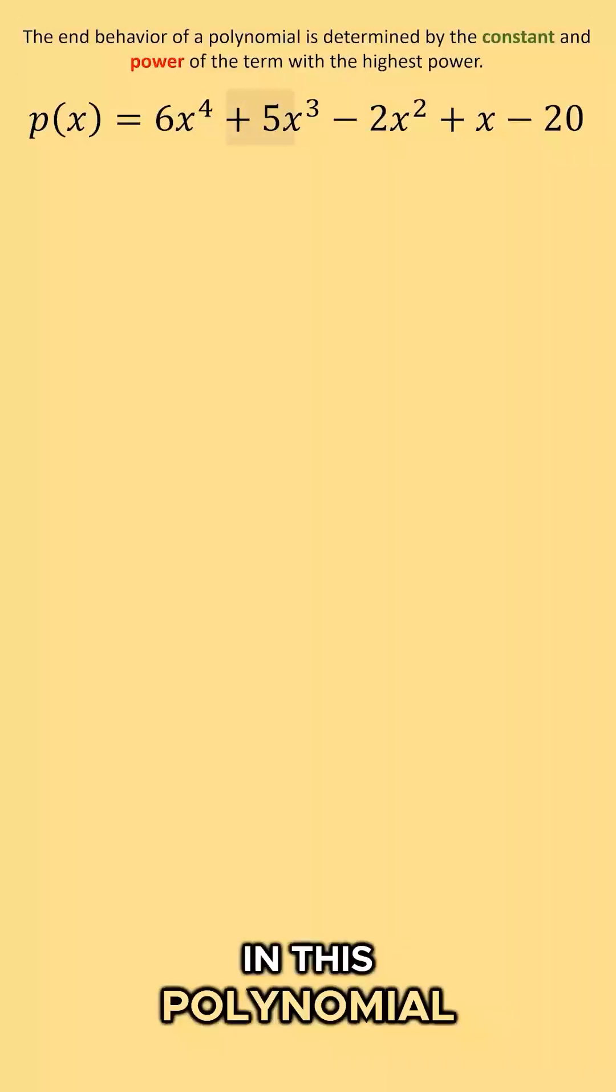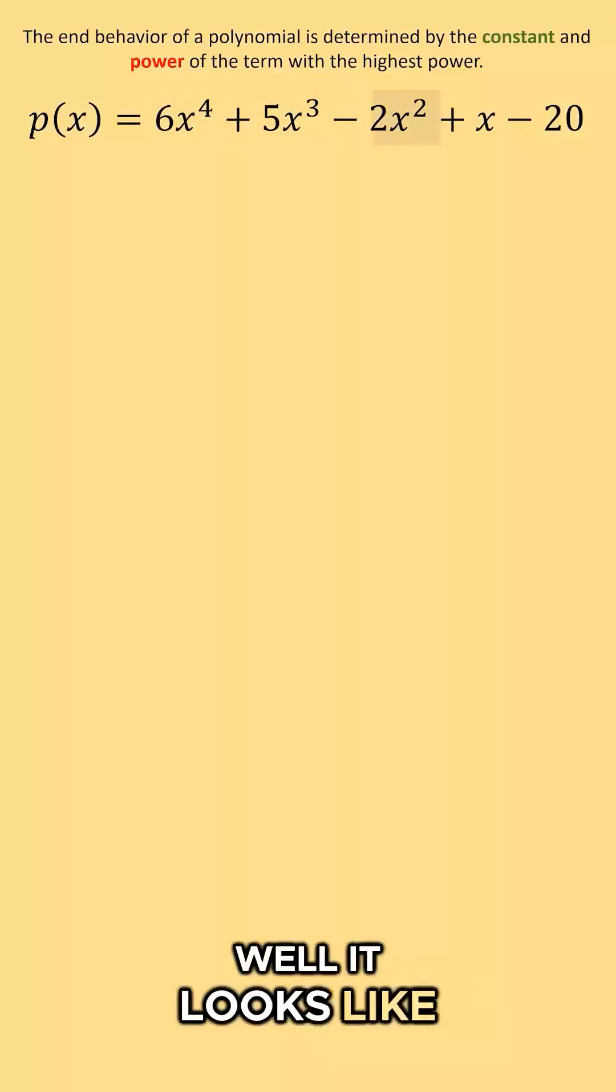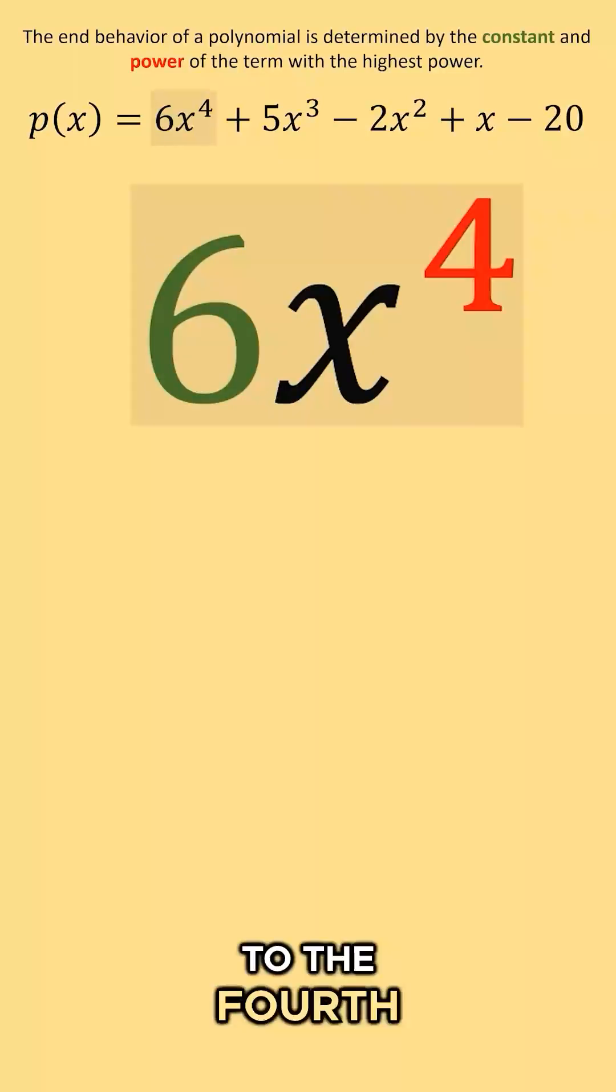So when looking in this polynomial, which of these terms has the highest power? Well, it looks like this 6x to the 4th is the highest power term in my polynomial. So 6x to the 4th is going to determine our end behavior.